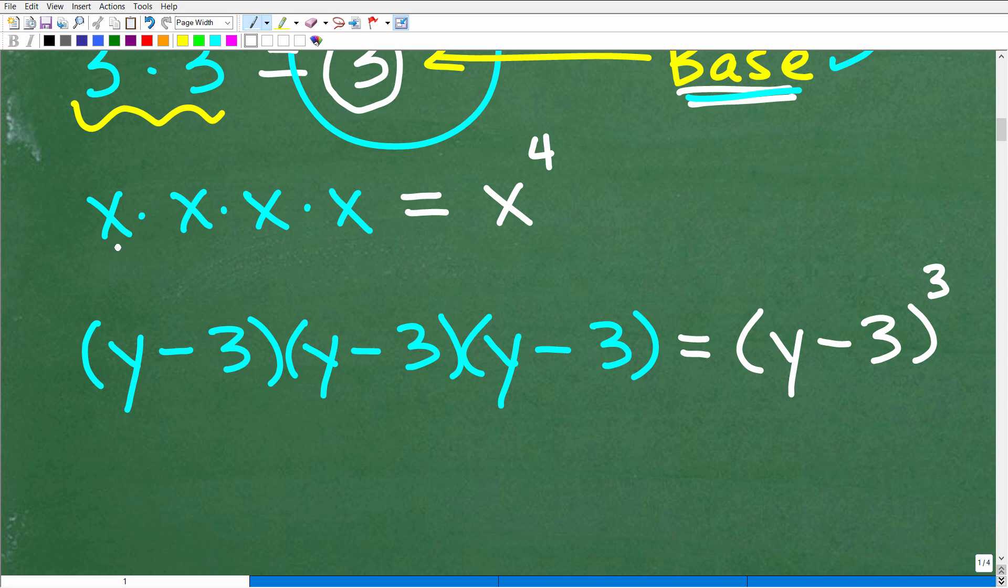Okay? And there's no difference. So here I have x times x times x times x. So it's the same thing being multiplied by itself four times. Right? So here's four times. So what's being multiplied? x is being multiplied. So x is my base. And how many times is x being multiplied by itself? Four times. So x times x times x times x is x to the fourth power.